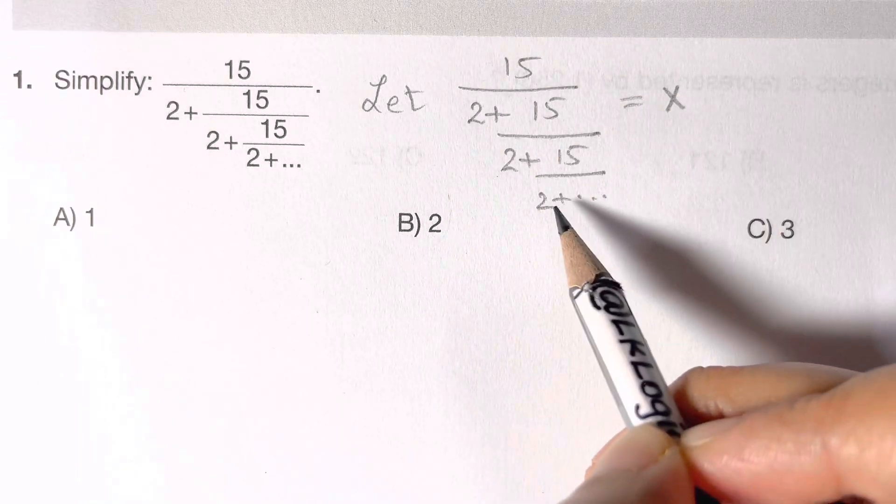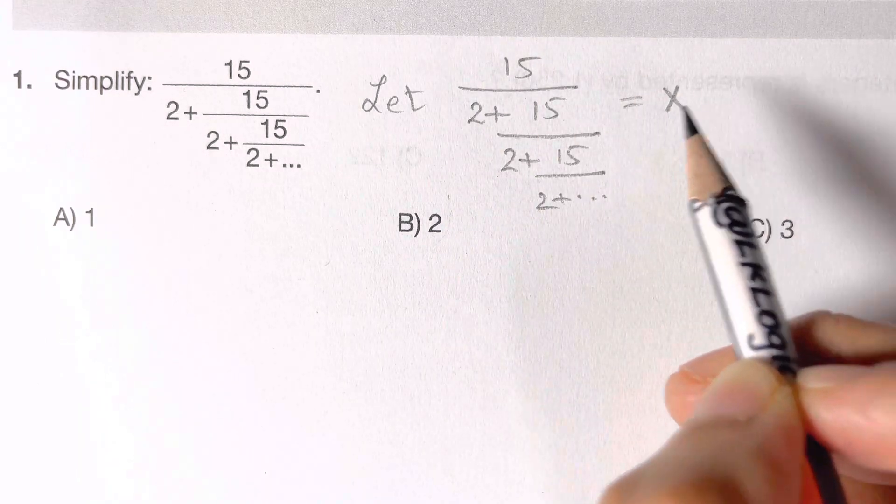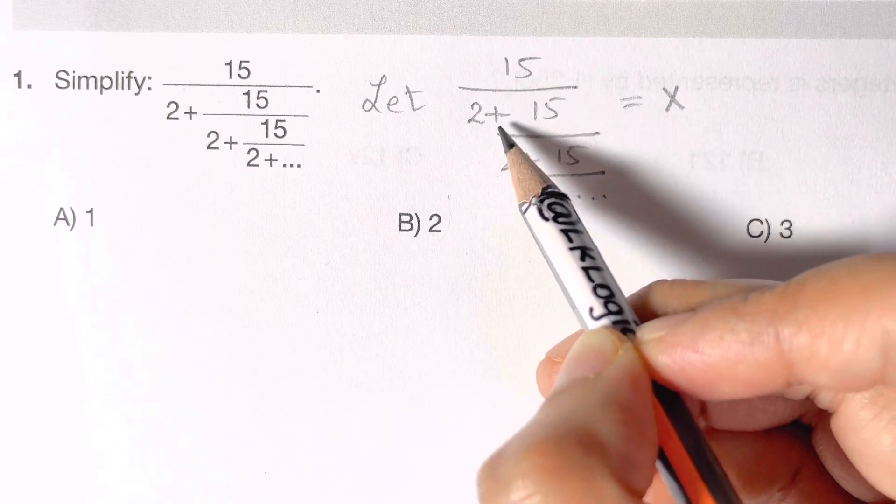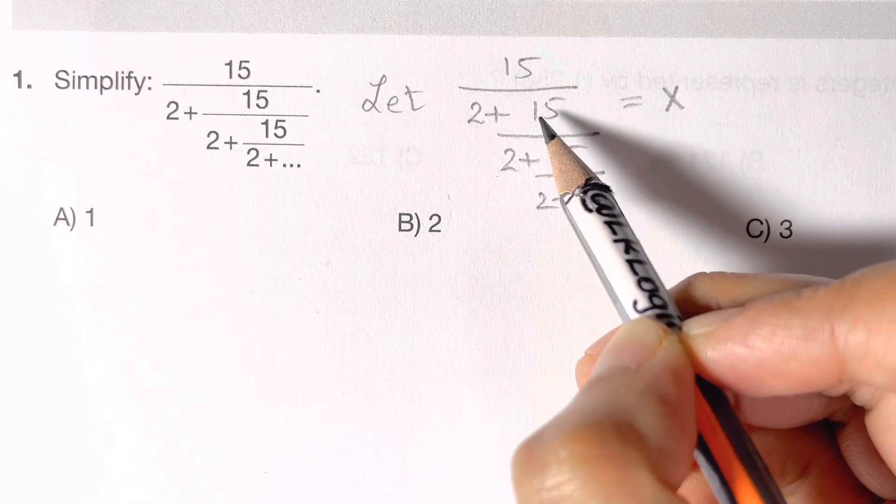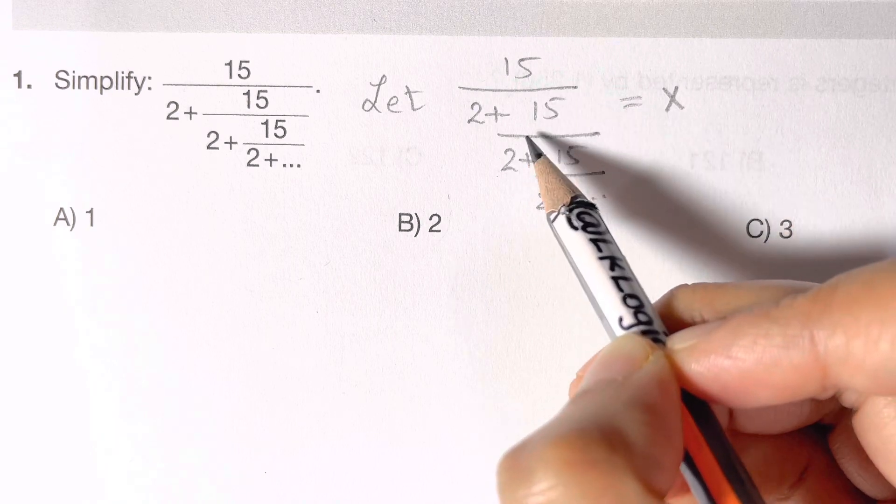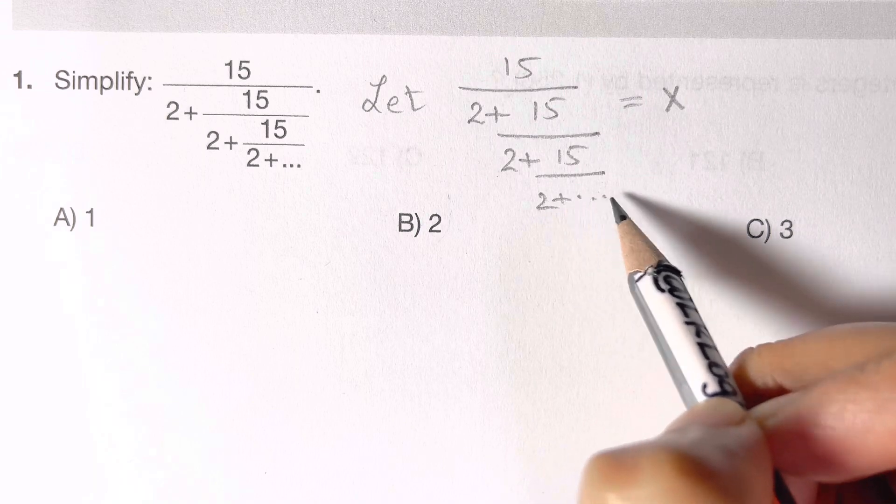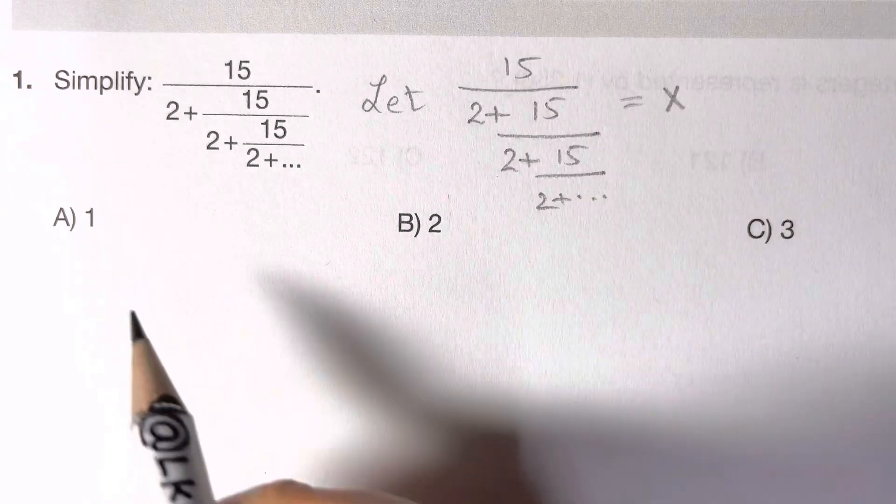We're going to let this equal to x. Now if you can see, 15 over 2 plus, it's again repeating, it's recurring. 15 over 2 plus, and again it's recurring 15 over 2 plus.